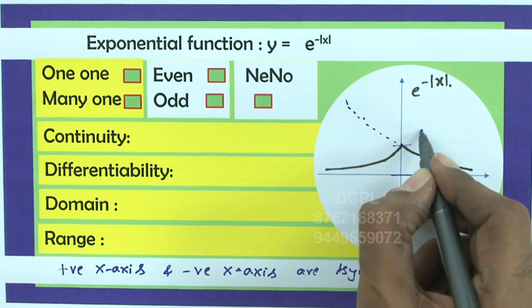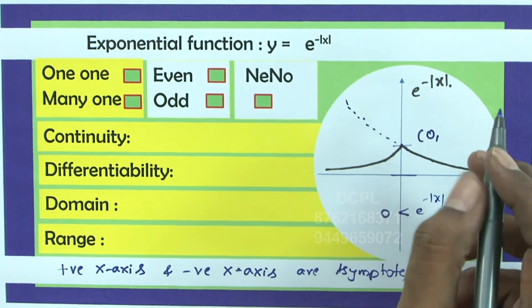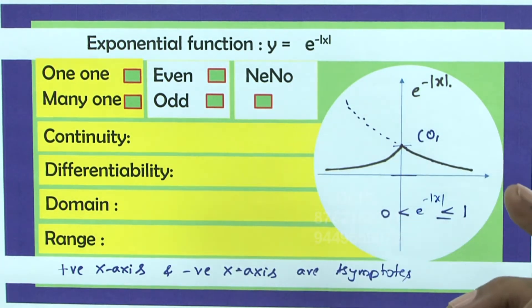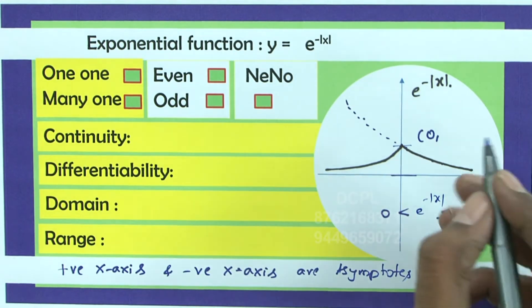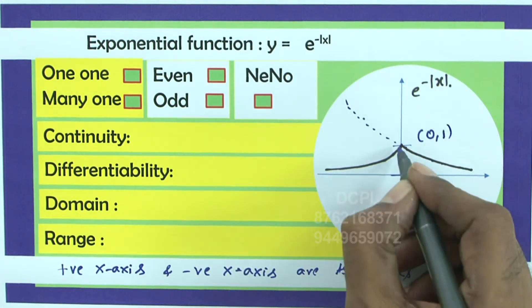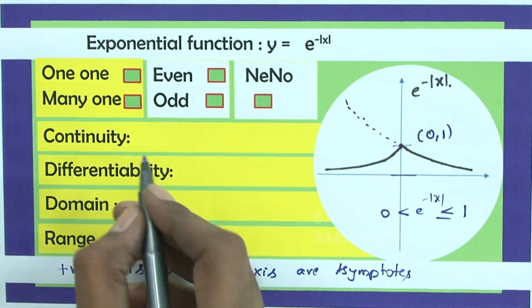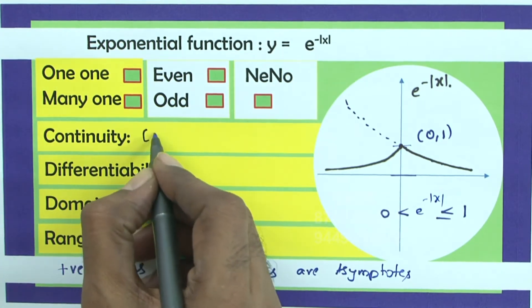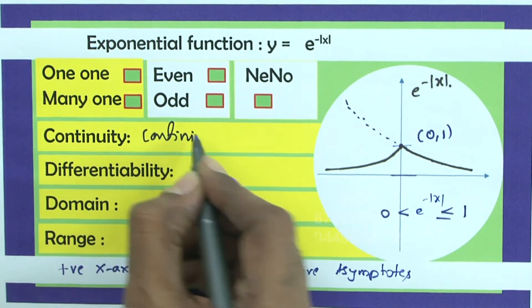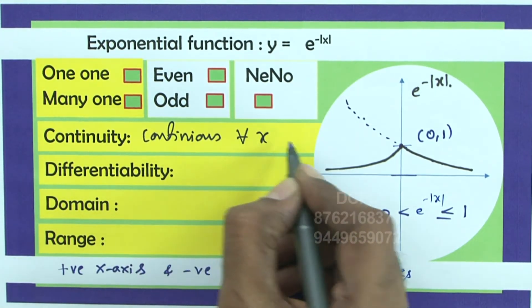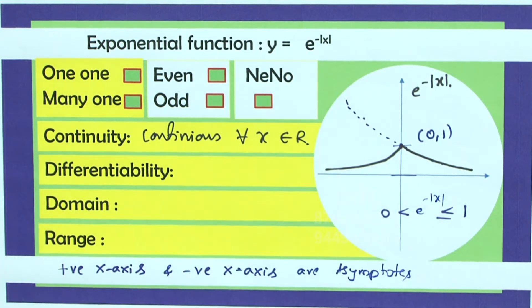When it is equal to 1? When x is 0, y is e power minus 0. That is e power 0 that is equal to 1, 0 comma 1 and it is a real point. Is it continuous? Yes. Continuous for all x belongs set of real numbers.